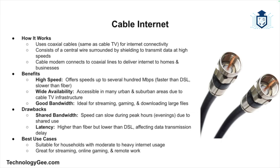Next, let's talk about cable internet, one of the most common types available today. Cable internet uses the same coaxial cables that deliver cable TV service to provide internet connectivity. These cables consist of a central wire surrounded by shielding, which transmits data at relatively high speeds. A cable modem connects to these coaxial lines to deliver internet access to homes and businesses.